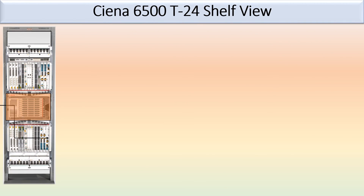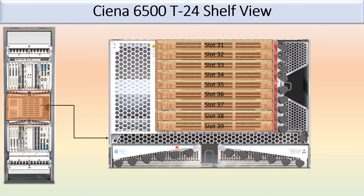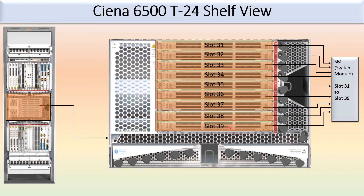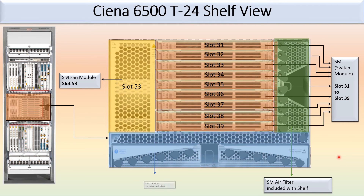This is the shelf air filter. Here is the bigger picture of the switch module — slot 31 to slot 39 — all switch modules. This is the fan module for these switch modules. There is also an SMEO filter included with the shelf, and a shelf air filter.